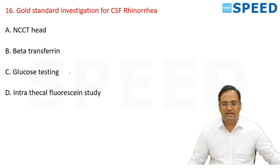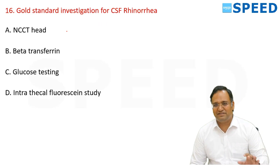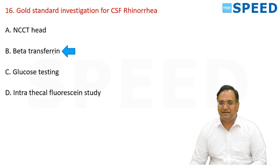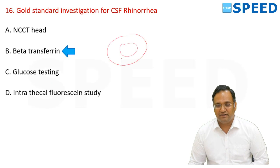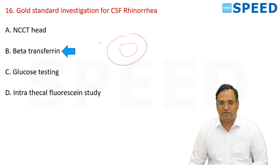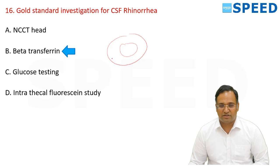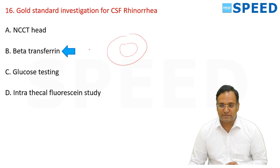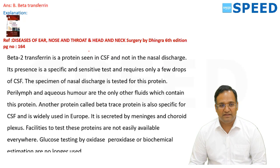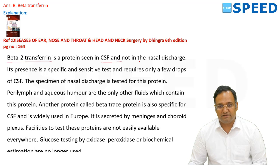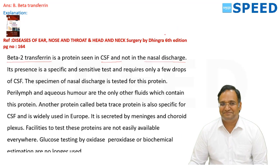The gold standard investigation for CSF leak is beta transferrin. Initially a halo test is done — placing fluid on tissue paper shows a double ring sign. However, the best and most specific investigation is beta transferrin testing. Beta transferrin is a protein present in CSF but not in nasal discharge.